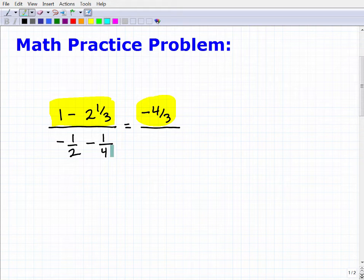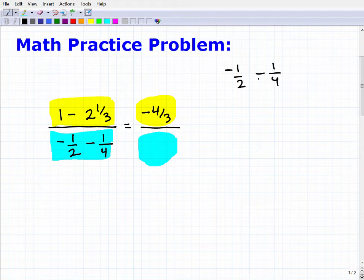Now let's go ahead and work on the denominator. We have negative 1 half minus 1 fourth. We know this is going to be negative, so we need to get a lowest common denominator. We know 1 half is the same thing as 2 fourths. So this is negative 2 fourths minus 1 fourth, and that's going to give me negative 3 fourths. So hopefully you got that right.